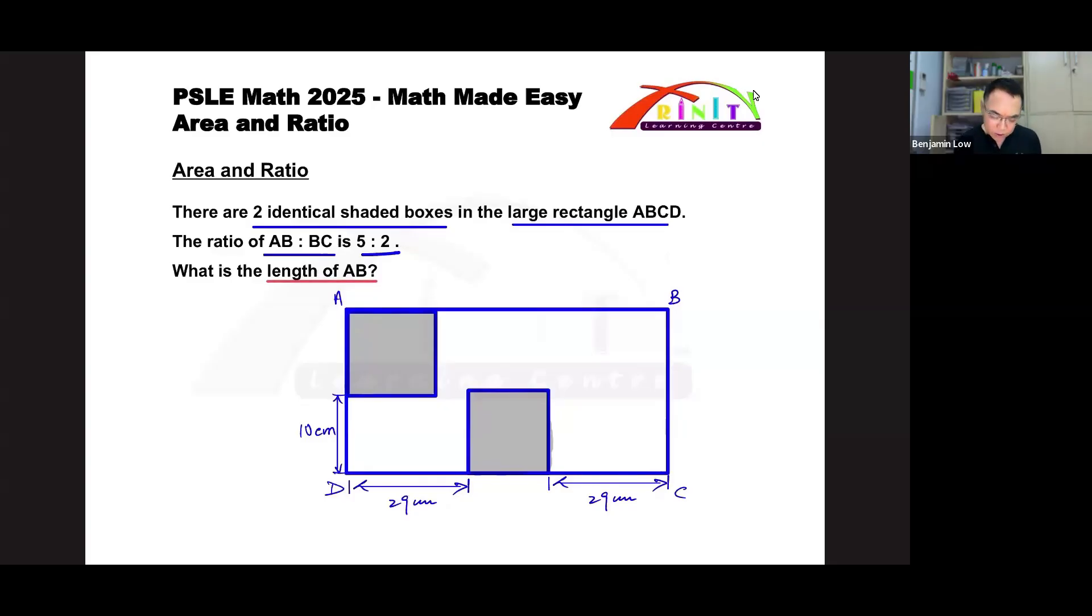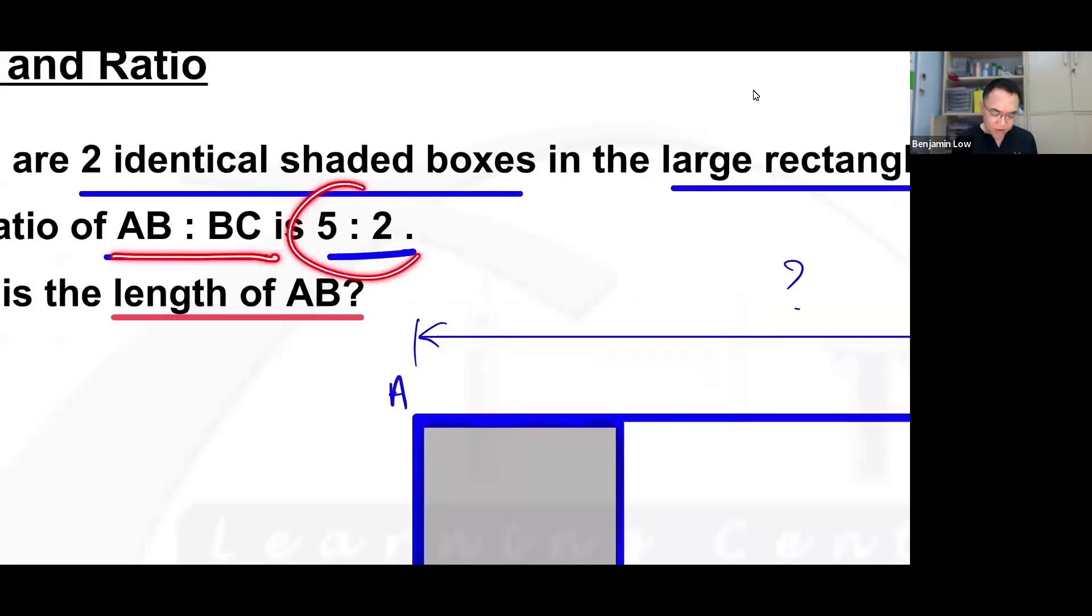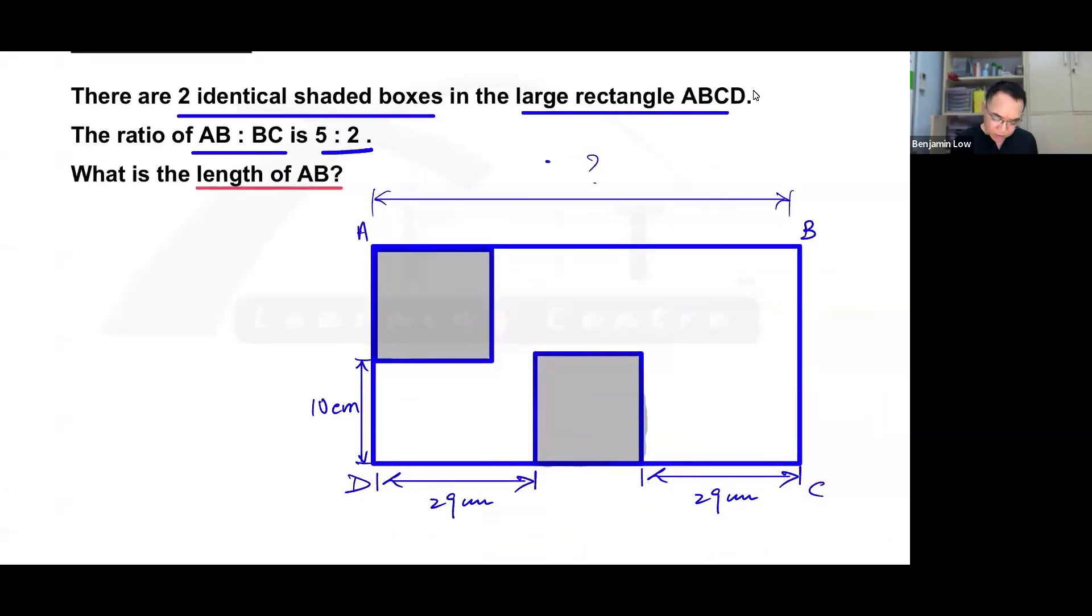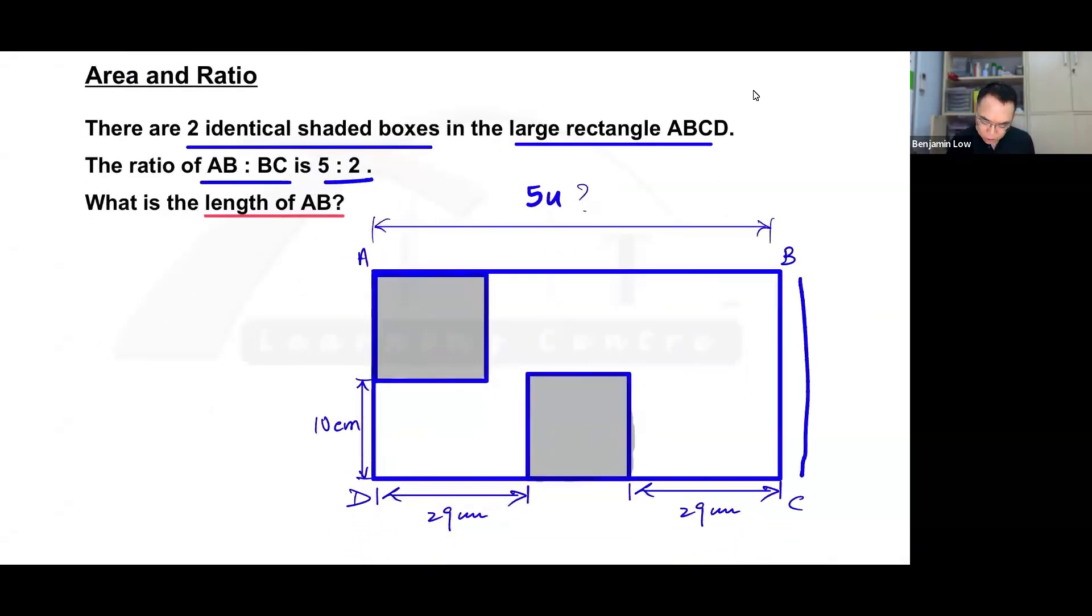So in reality, what they're asking you for is to find the length of AB, which would be the length over here. Let me show you. Okay, so really this is the question and we should put a question mark over here. The next thing you want to look at is that they have a ratio of AB to BC, which is 5 is to 2. And what that means is that this AB over here would be 5 units. Sorry about that, 5 units and BC would be 2 units.